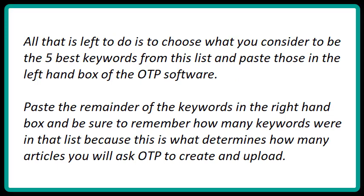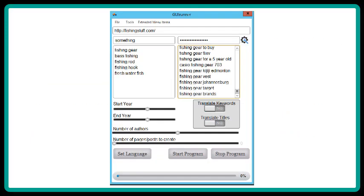All that is left to do is choose what you consider to be the best five keywords from this list and paste those in the left-hand box of the OTP software. Paste the remainder of the keywords in the right-hand box, and be sure to remember how many keywords were in that list, because this determines how many articles you will ask OTP to create and upload. And now you're ready to put this magic software to work.